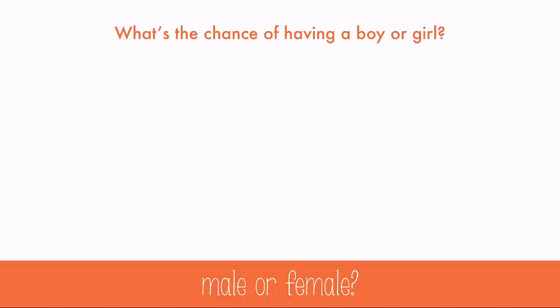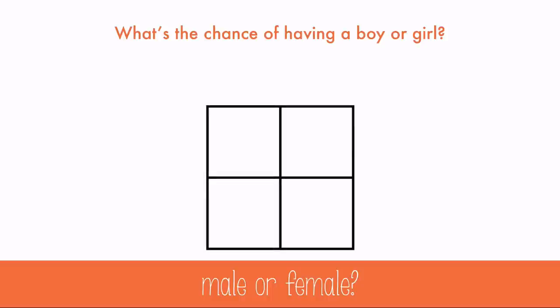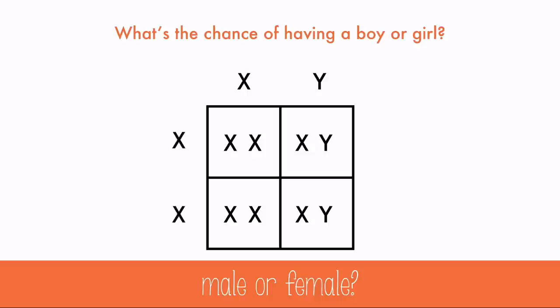You can even use a Punnett Square to find the chance of having a boy or a girl. In this case, we use the sex chromosomes X and Y. Males have an X and a Y, and females have two X chromosomes. Cross these just like you would any other Punnett Square, and you see that there's a 50-50 chance of having a boy or a girl. Just because a couple might have four girls in a row doesn't make them any more or less likely to have another girl — every single time a baby is made, there's a 50-50 chance of it being male or female.